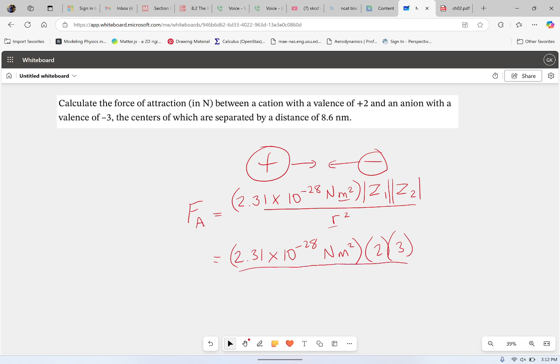I then multiply that by 2 and then by 3—taking the absolute value—all over the radius squared. The problem gave us nanometers, which means × 10^-9 meters. So we put that on the bottom: 8.6 × 10^-9 meters, and then square that.